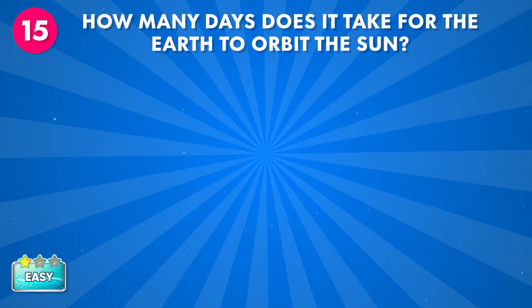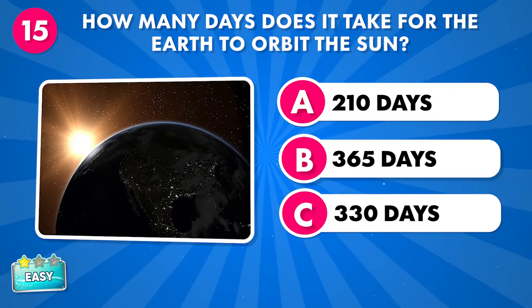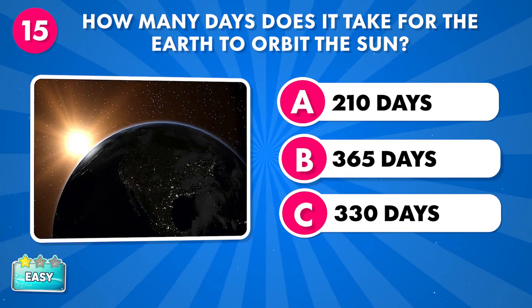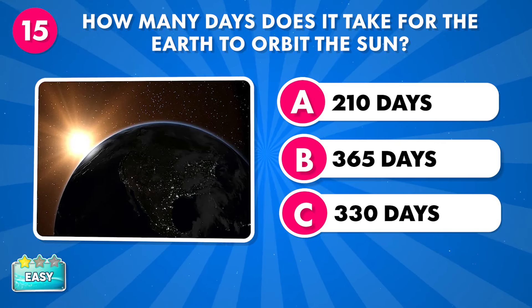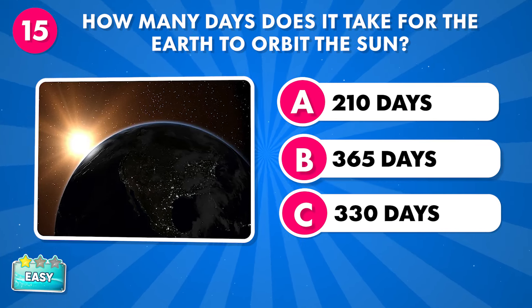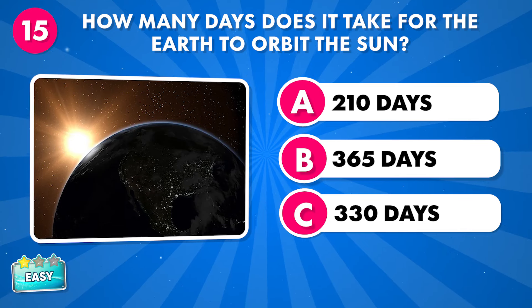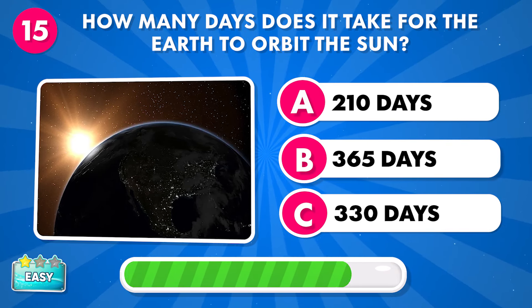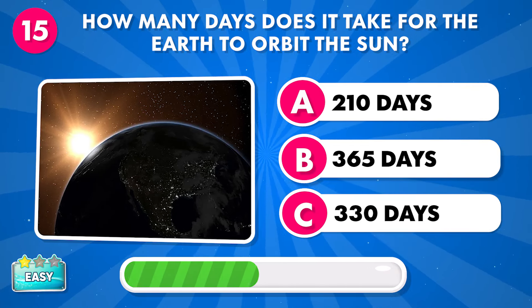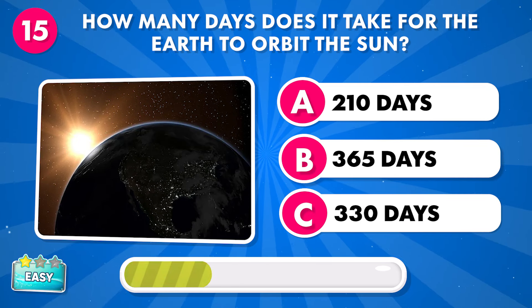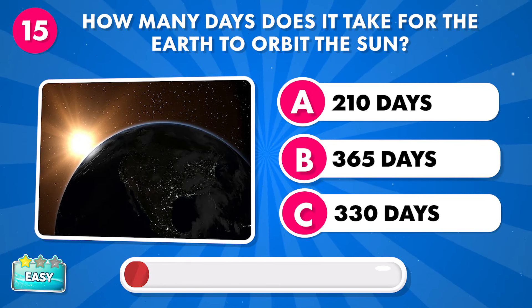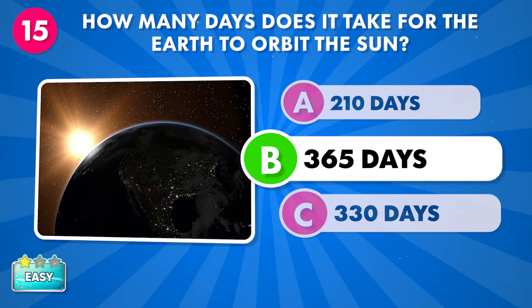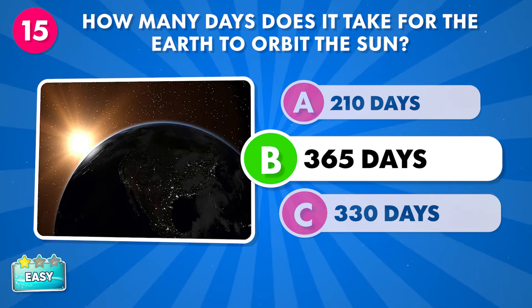How many days does it take for the Earth to orbit the sun? A: 210 days, B: 365 days, C: 330 days. It's 365 days.